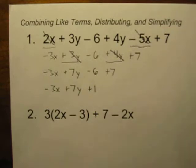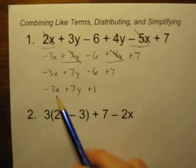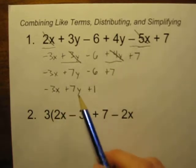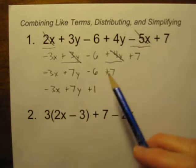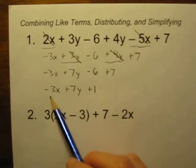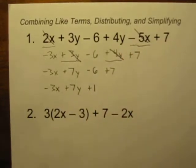So there we've solved it. Well we haven't solved it. There we've just combined like terms. We've simplified it, we've shortened it. We still don't know what x equals or what y equals, but we've at least simplified it. We've shortened it down to negative 3x plus 7y plus 1.